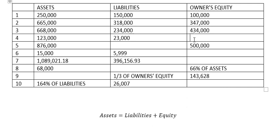This one minus Liability gives us one hundred thousand. This one minus this one gives us three hundred seventy-six thousand. This one minus this one gives us about nine thousand and one. And this one minus this one gives us about...